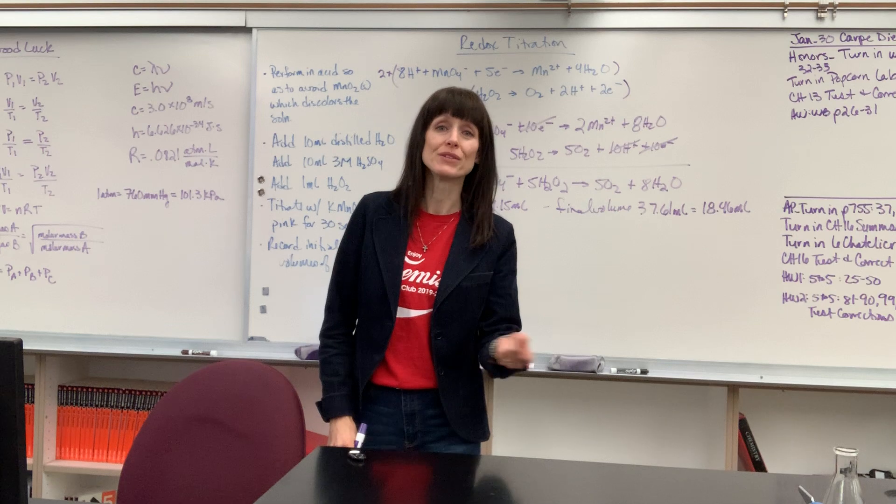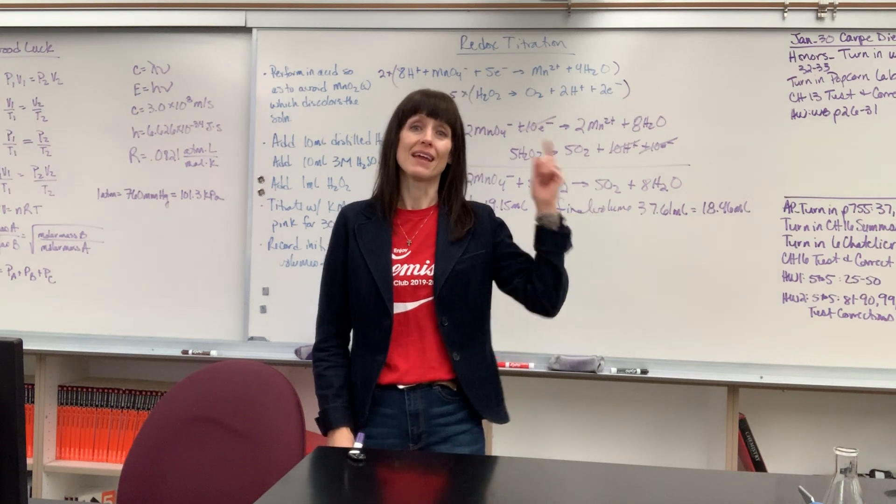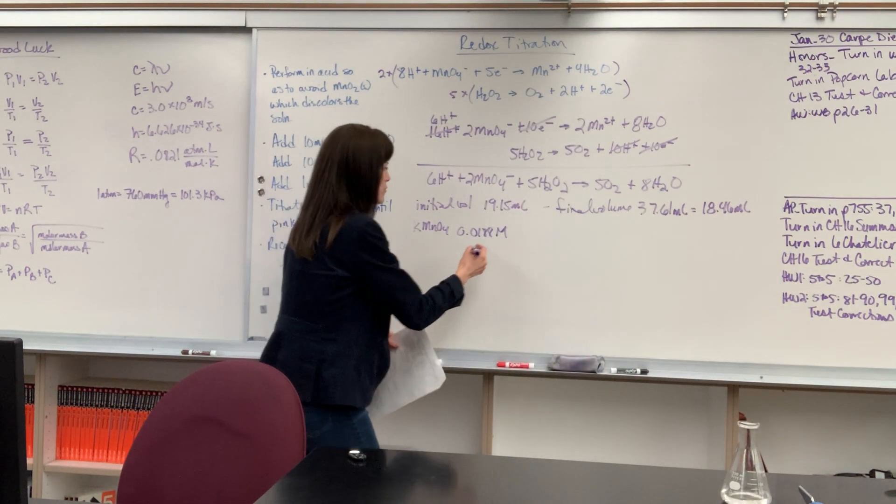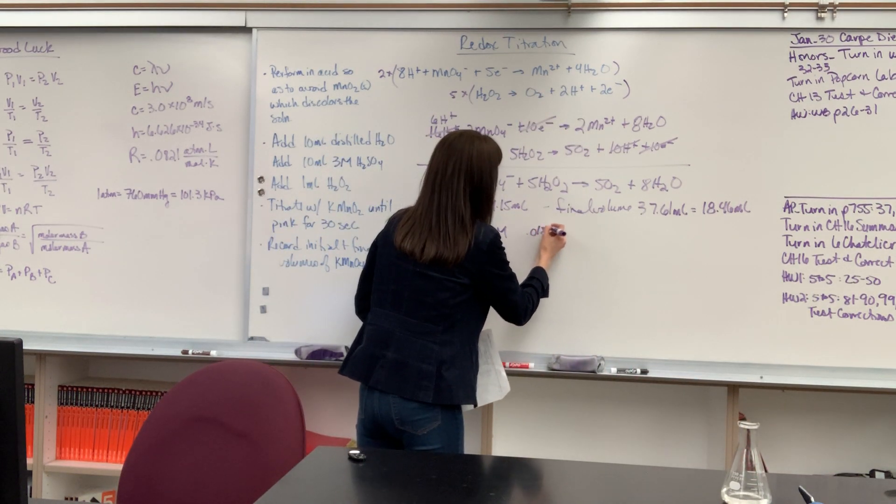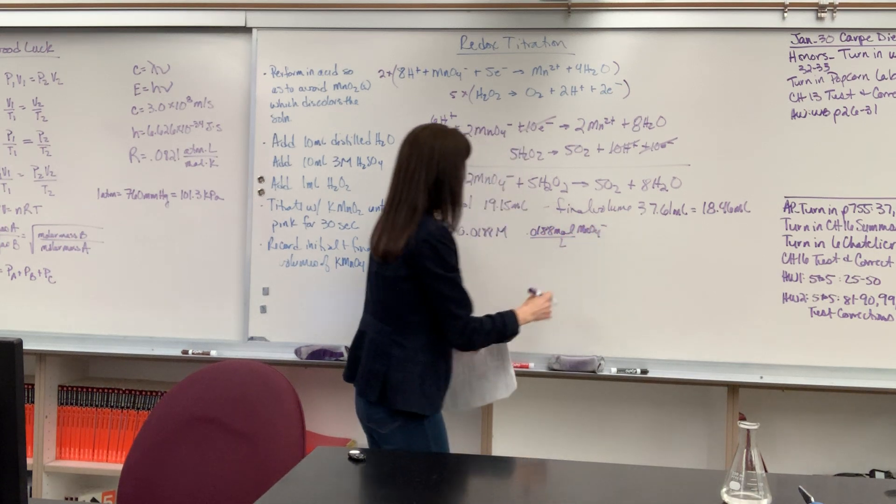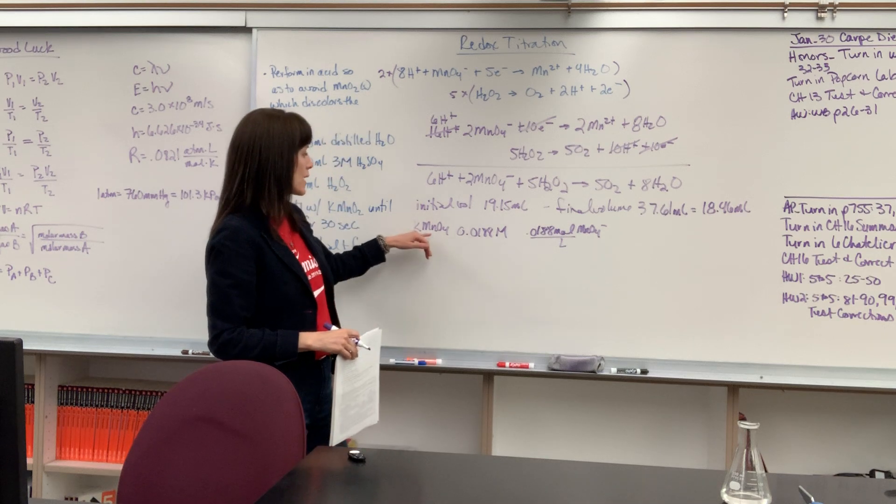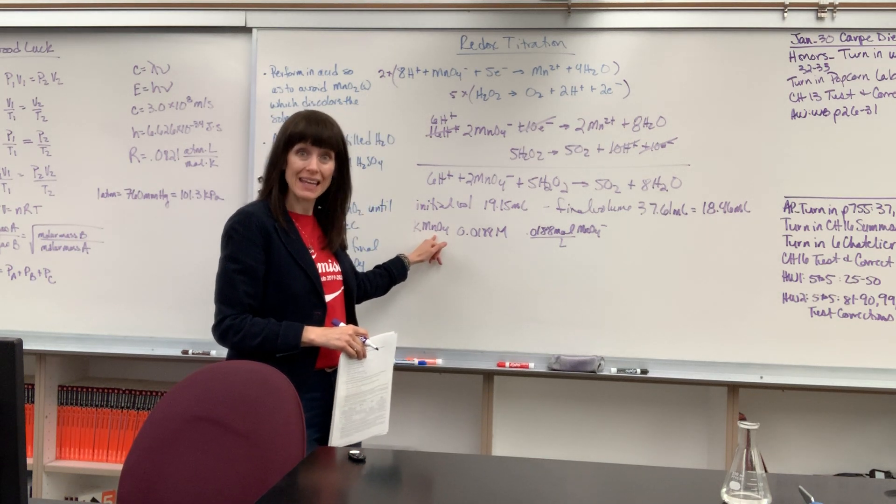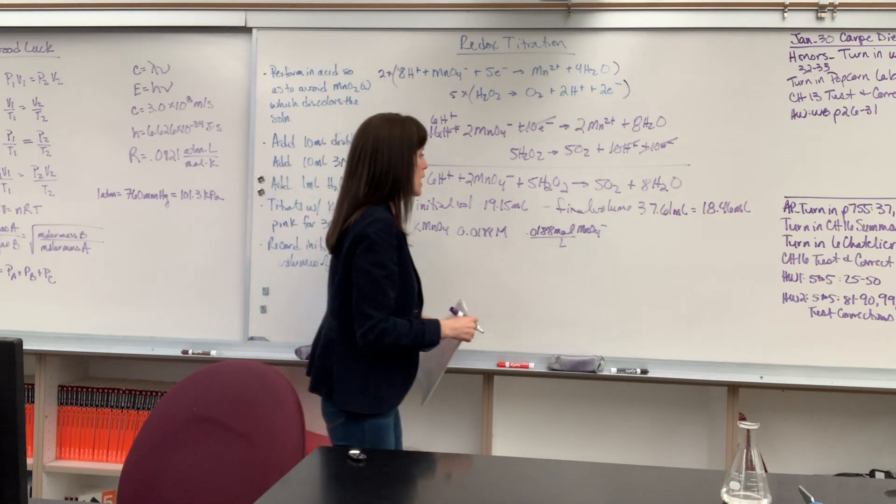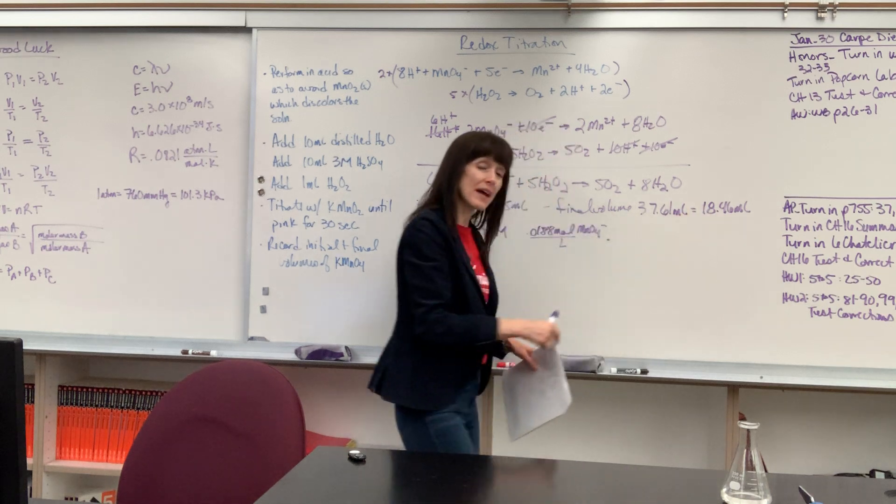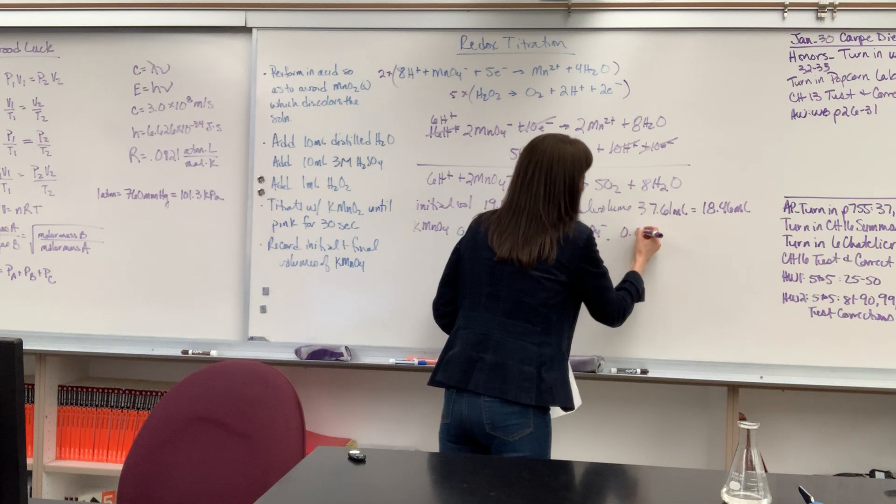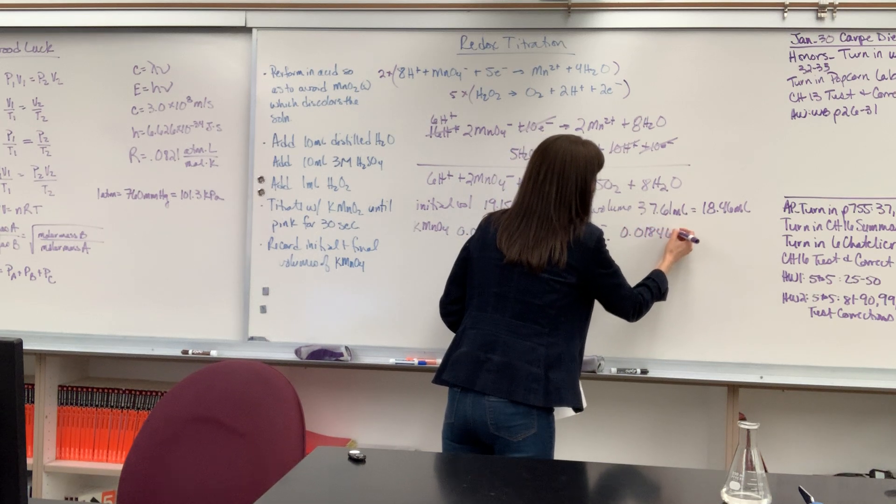Well, we can find the exact number of moles that we added of that permanganate into the hydrogen peroxide. So let's find the number of moles. We are going to have 0.0188 moles per liter of the permanganate. Remember, for potassium permanganate, one mole of potassium permanganate has one mole of permanganate. So I can just say this molarity is the same molarity as the permanganate. Multiply that by, I'm going to convert that to liters by dividing by 1,000. So let's multiply by 0.01846 liters.